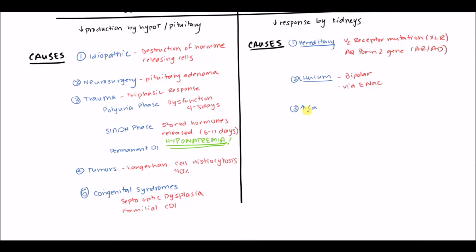Electrolyte abnormalities can also cause nephrogenic diabetes insipidus, such as hypercalcemia — particularly if greater than 11 mg/dL. Importantly, as soon as you correct the calcium, it's reversible. Another cause is hypokalemia: low potassium decreases the ADH response, though these tend to be less severe forms.